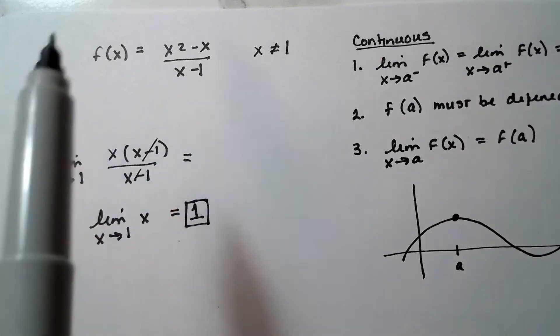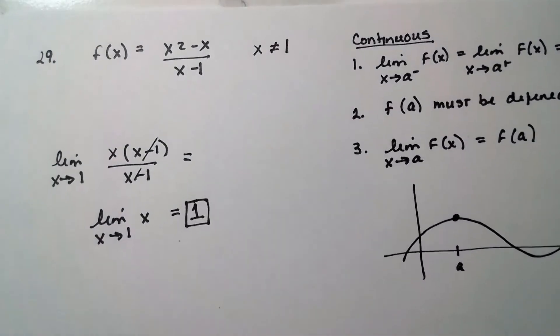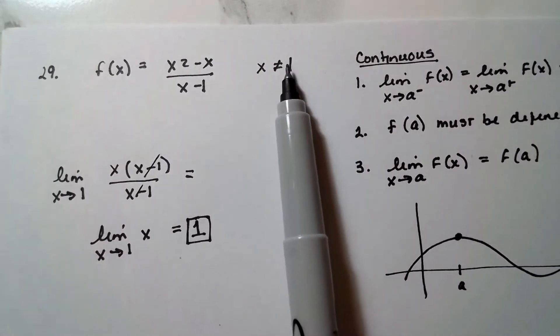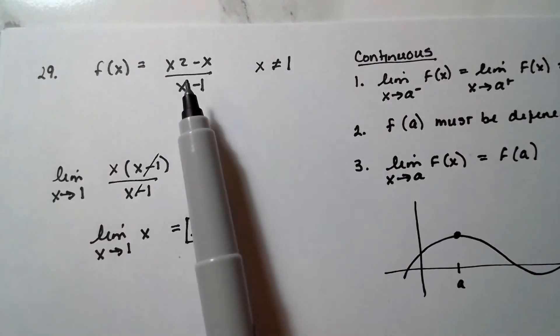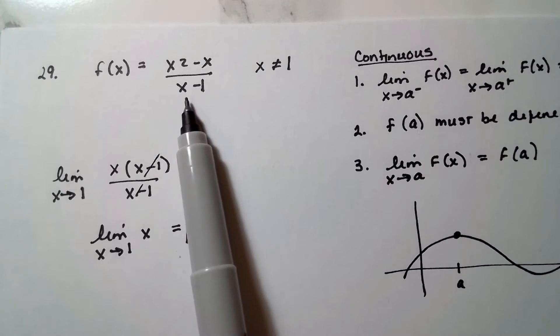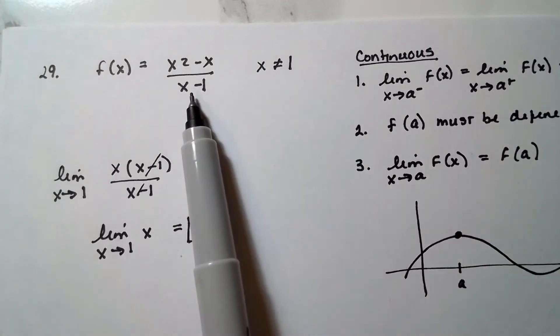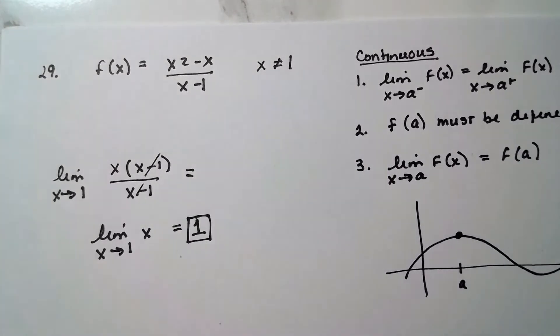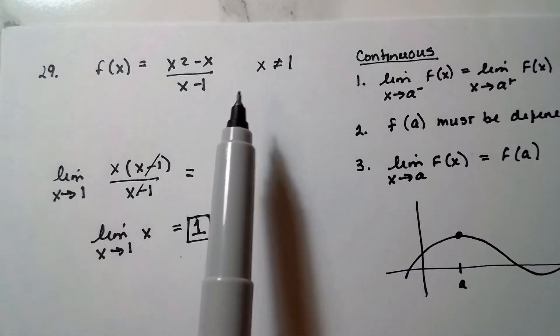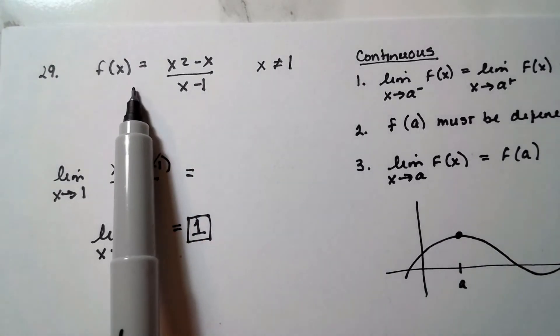So you're given a function, f of x is x squared minus x over x minus 1, and you're told that x cannot be equal to 1. Why? Because we know if we plug in a 1 down here, we have a 0 in the denominator, and that's bad. So we have to find a way around this. We need to figure out what value of x can we use to make this function continuous.